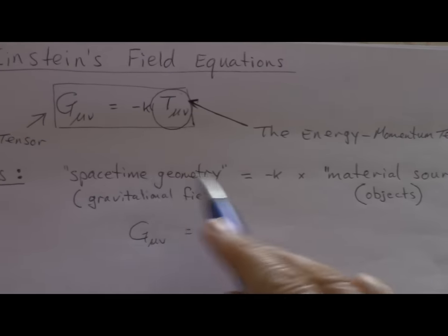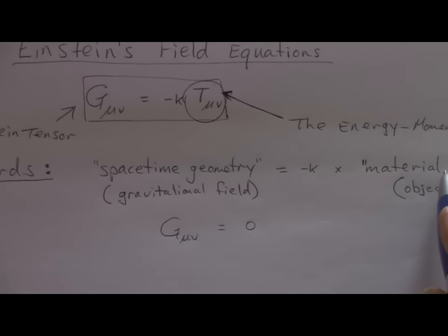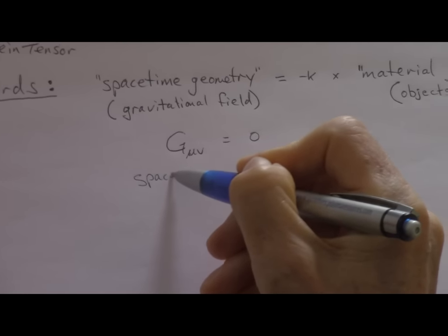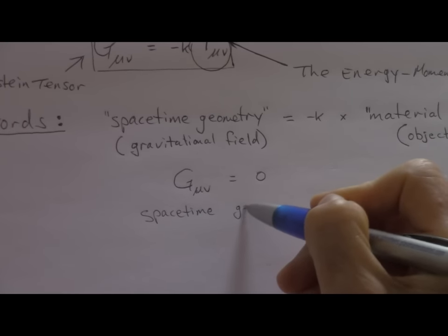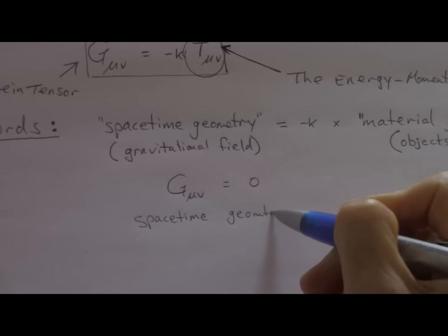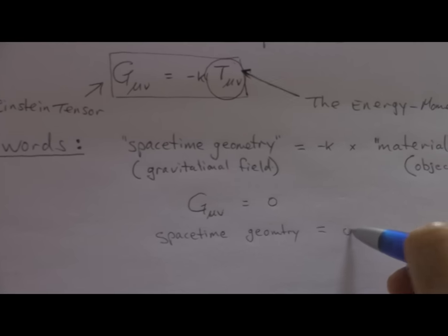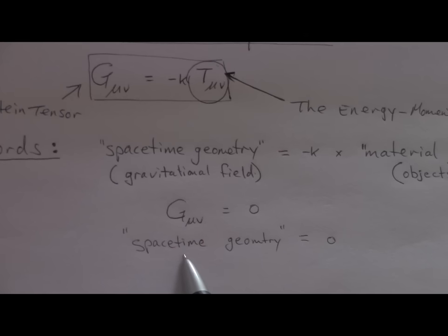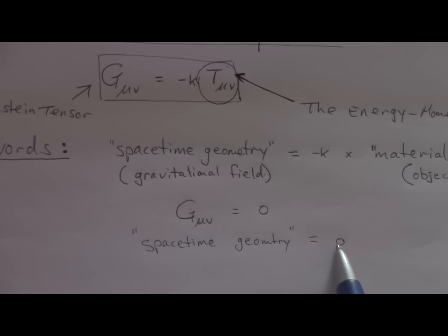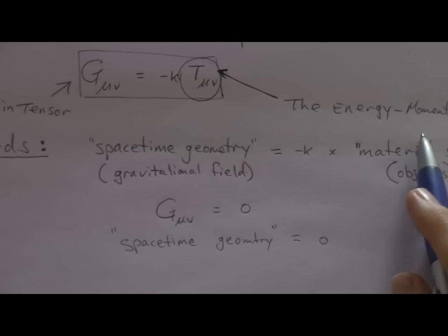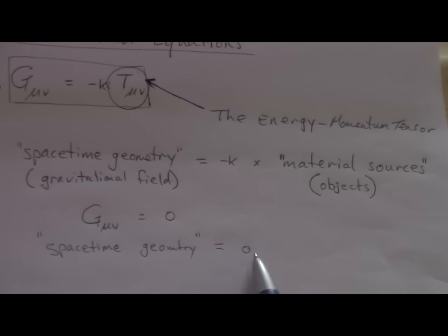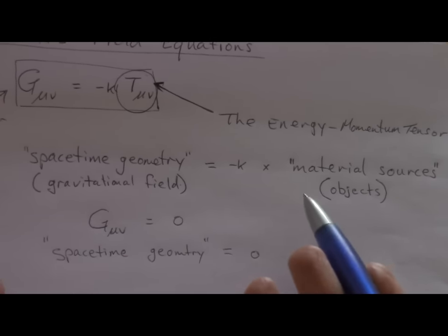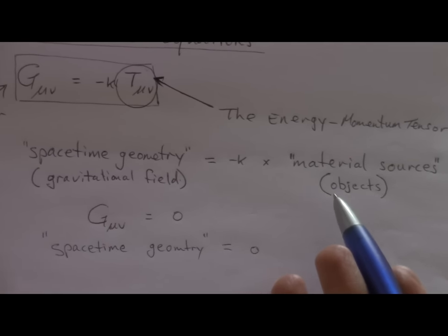Well, comparing this to the same expression in words, let's write this out specifically in words. So we have space-time geometry, which is the gravitational field, equals zero. So we have on the left a geometry and on the right zero. But that means we have no material sources in this expression. Here it is mathematically, here it is in words. We have no matter, no material sources.